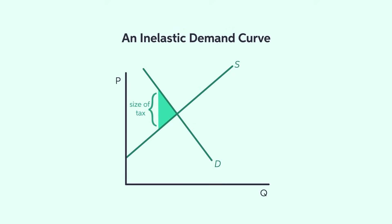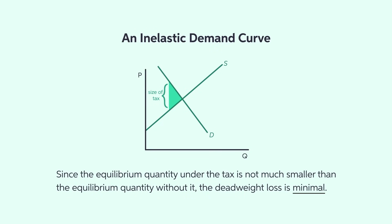The other determinant of deadweight loss is the elasticity of demand. In general, as with supply, the more elastic the demand is, the larger the deadweight loss will be. Here, we can see a demand curve that is inelastic. When demand is inelastic, it is harder for consumers to leave the market when the tax increases the price consumers pay. As a result, the tax only reduces the equilibrium quantity by a little. Since the equilibrium quantity under the tax is not much smaller than the equilibrium quantity without it, the deadweight loss is minimal.